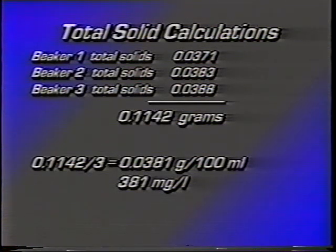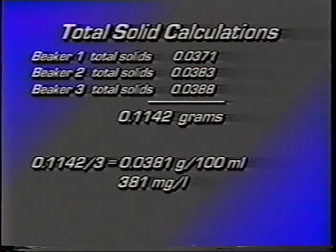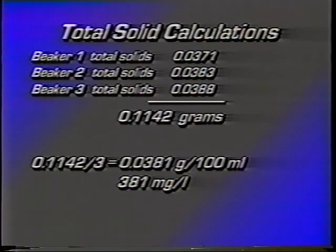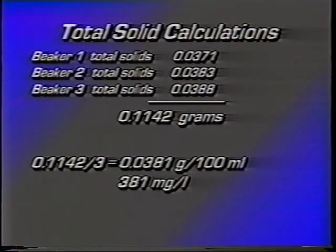Our resulting number is 381 milligrams of total solids per liter of river water. Now we're ready to use the Q value data table chart in order to calculate what our Q value will be for this value of total solids.